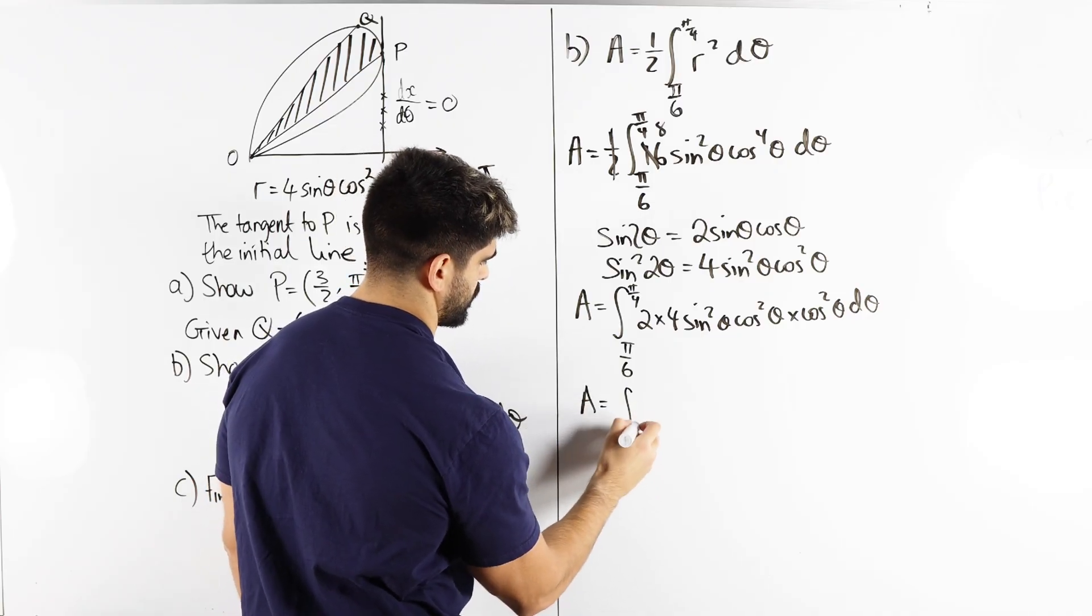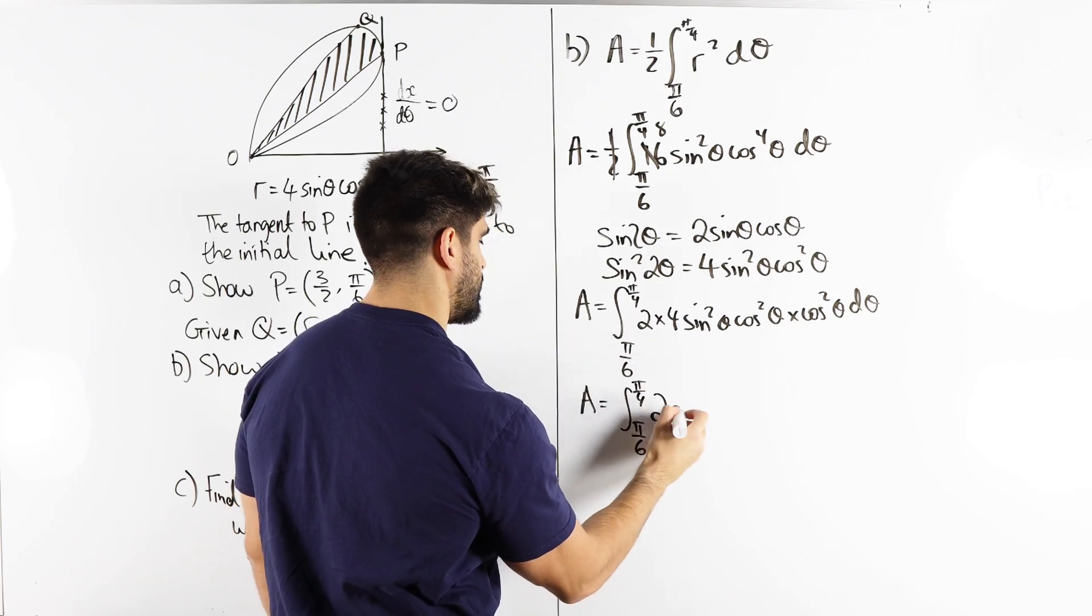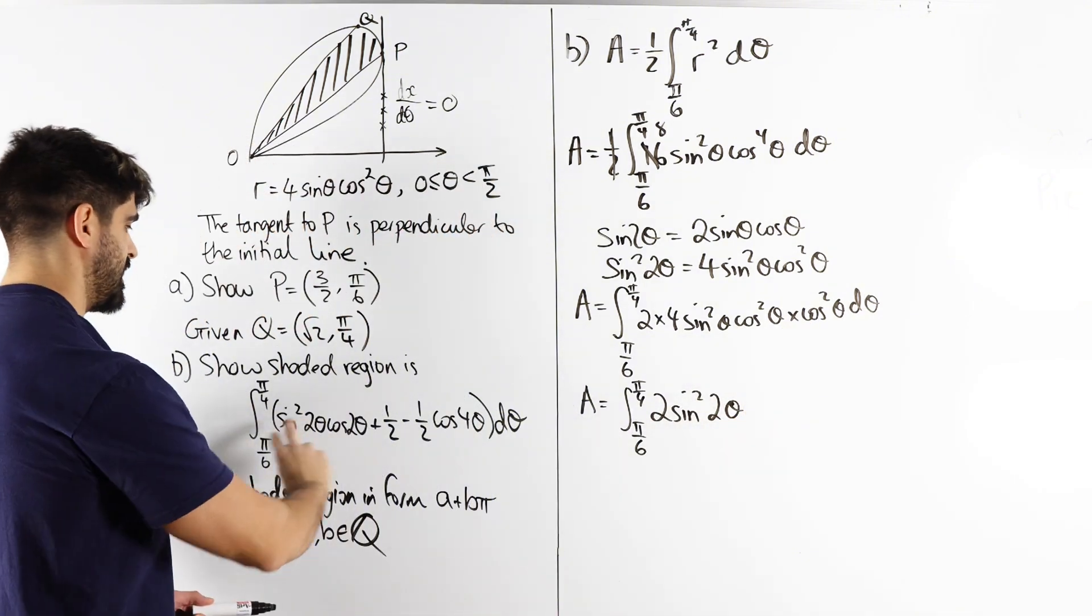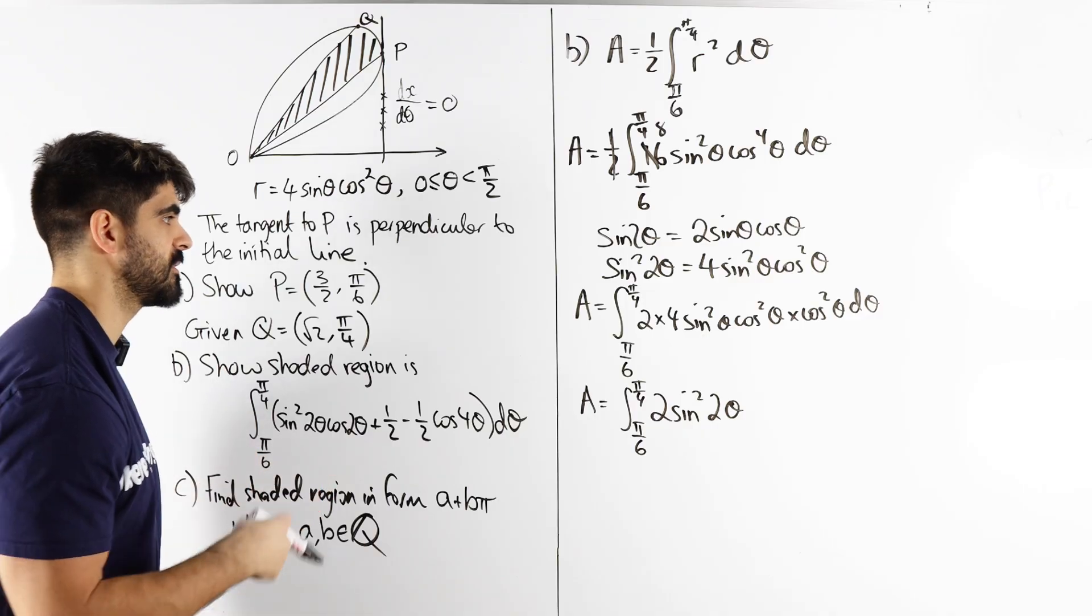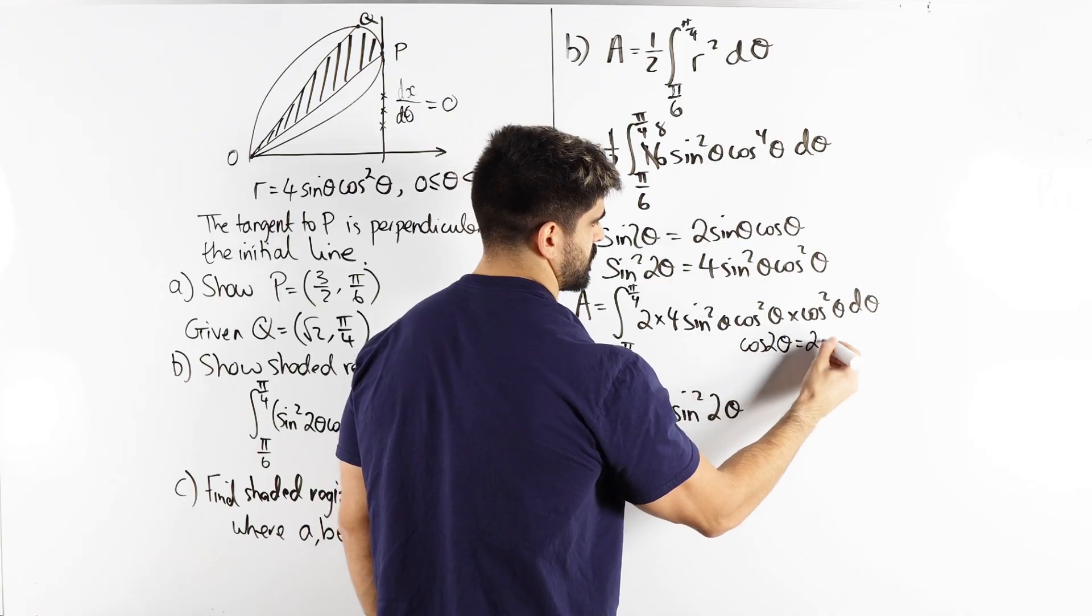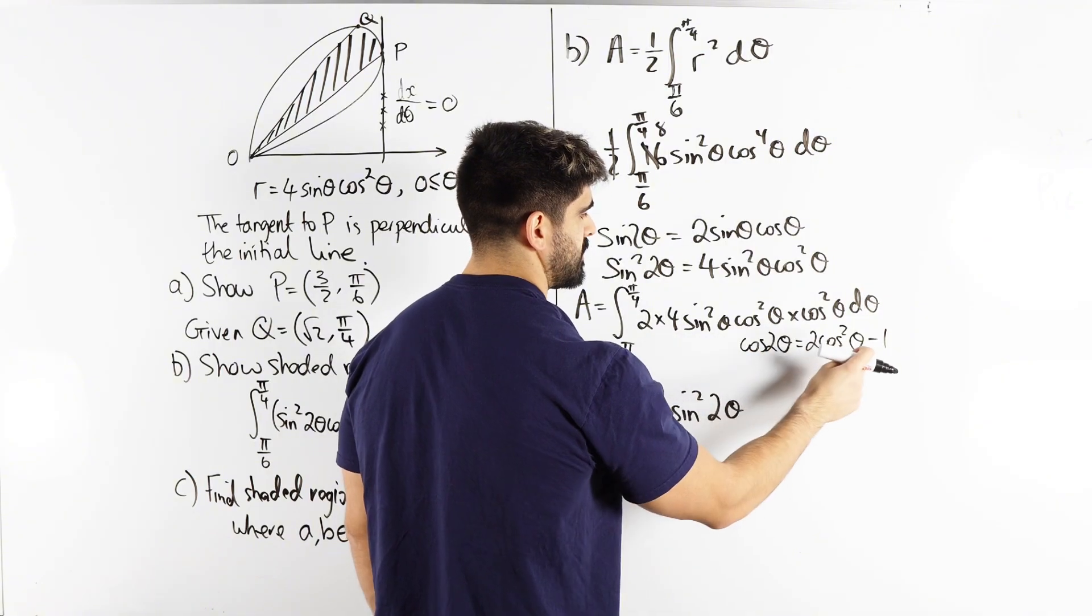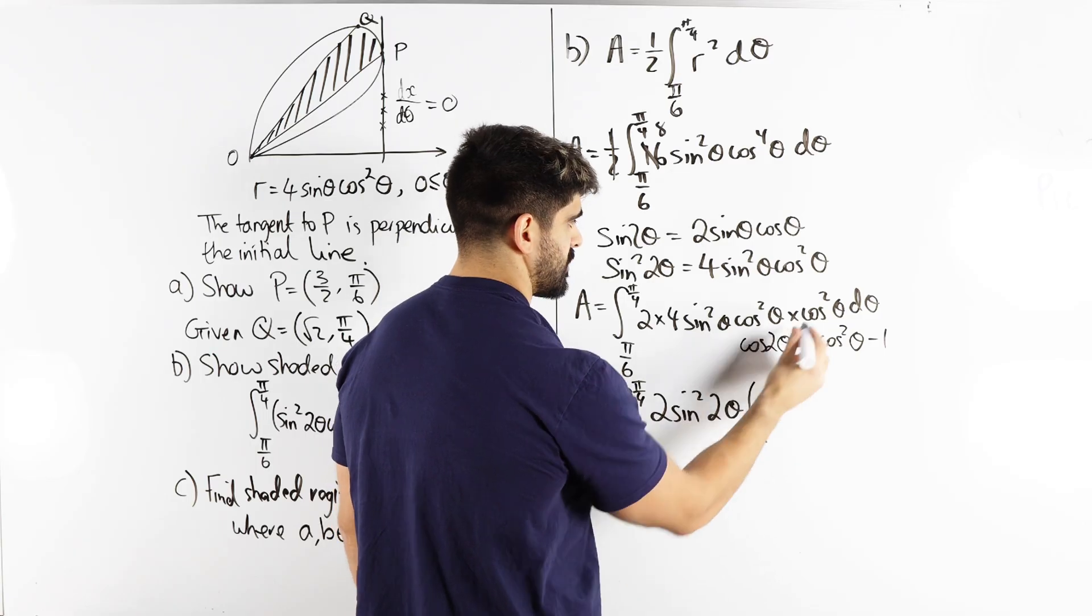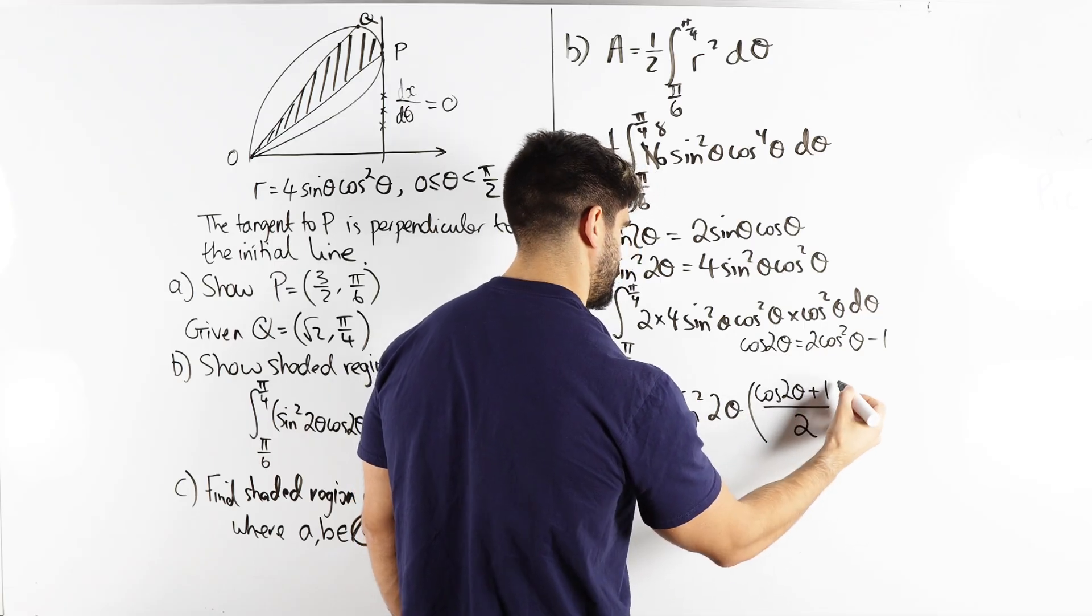So my A is the integral between pi over six pi over four of two sine squared two theta. But then there's this cos squared theta. I don't see any cos squared theta. We're going to somehow use the double angle IDs. I want to cos two theta. So here I'm going to use the fact that cos two theta is two cos squared theta minus one. Add the one to get cos squared two theta plus one and then I'm going to divide by two. So I'm going to rewrite this cos squared as cos two theta plus one over two.